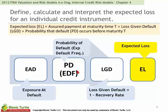Note that we tend to use probability of default and expected default frequency interchangeably. The probability of default is a Bernoulli variable — we either default or we do not; it's on or off. In terms of random variables, it's analogous to a coin flip, which means it's straightforward to calculate its variance.